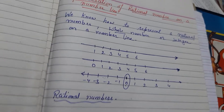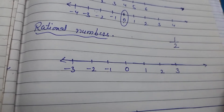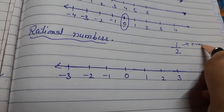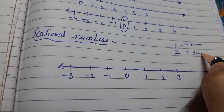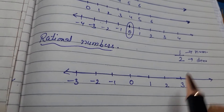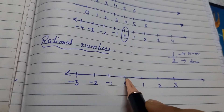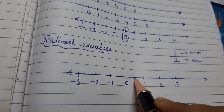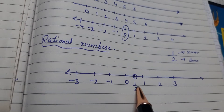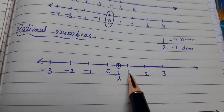Next is the rational numbers. How to represent the rational numbers? Suppose I am taking a number line and I am taking one rational number, that is 1 by 2. The rational number has an upper part called the numerator and a lower part called the denominator. Now this number I want to represent on the number line. 1 by 2, as we know, is the half of 1. It means if I divide this number line from 0 to 1 into equal parts, then the midpoint of 0 and 1 will be 1 by 2.